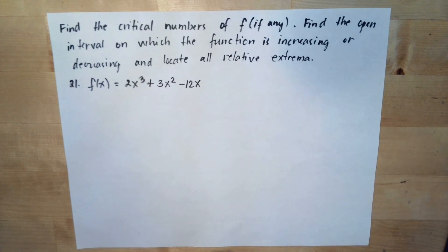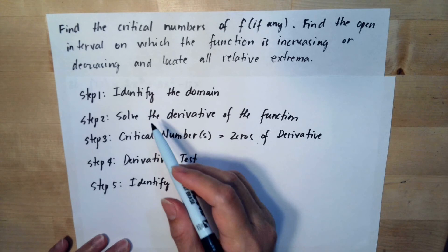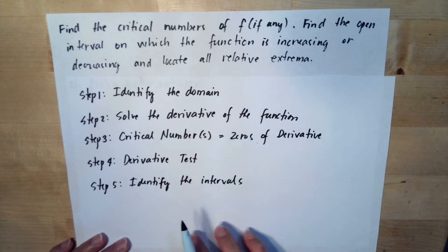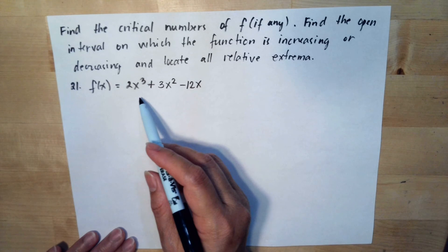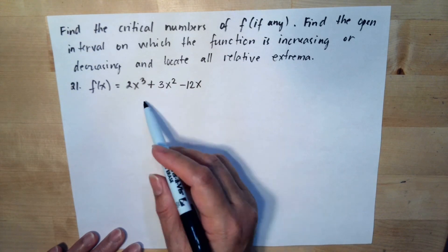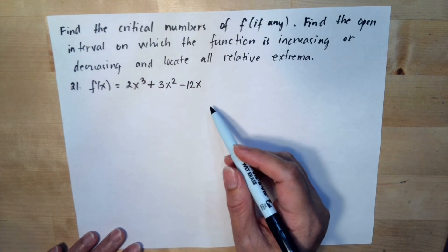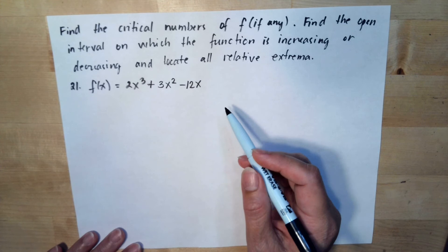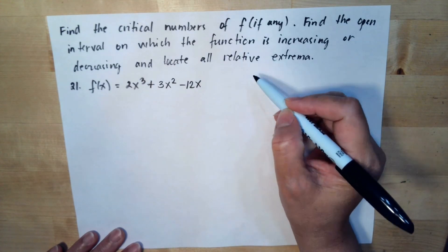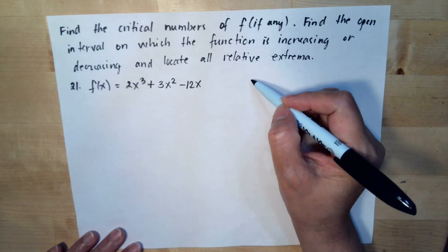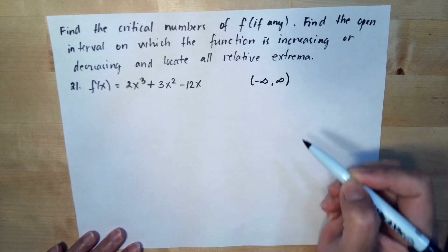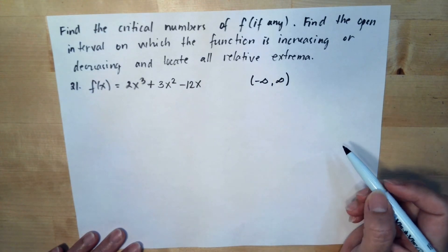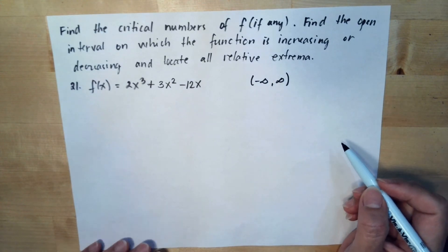The first thing we need to do is identify the domain. With this function, there is no denominator and no square root, so the graph is continuous. The domain is from negative infinity to positive infinity because there is no restriction.